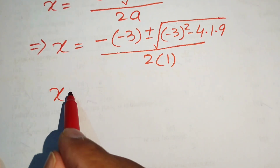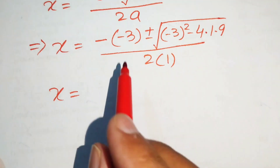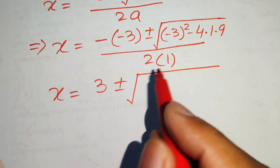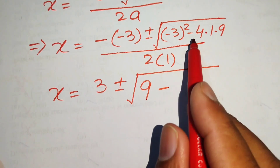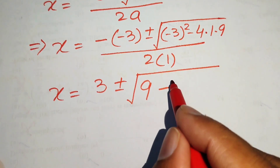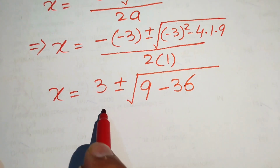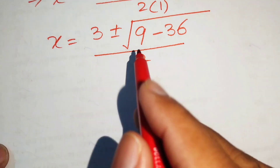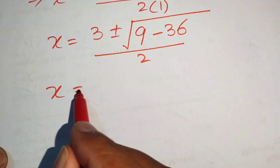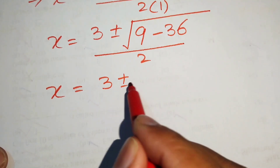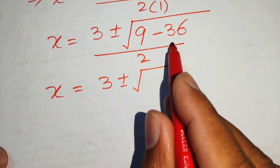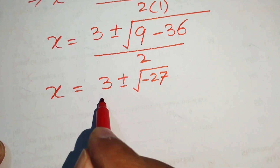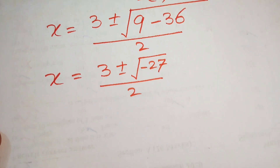Simplifying: minus times minus gives plus 3, and (minus 3) squared equals 9, and 4 times 9 equals 36, all divided by 2. So inside the square root we have 9 minus 36 equals minus 27.